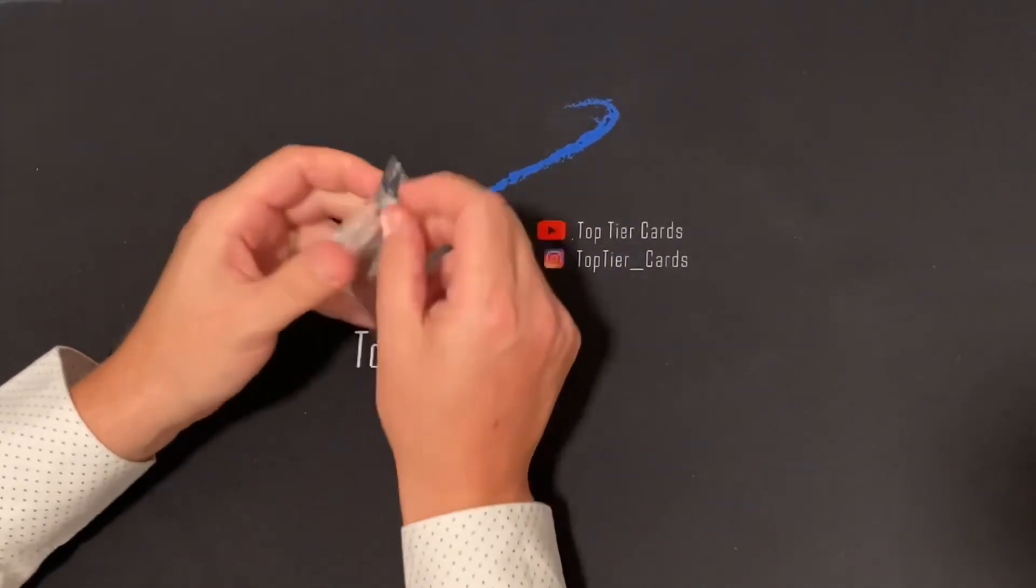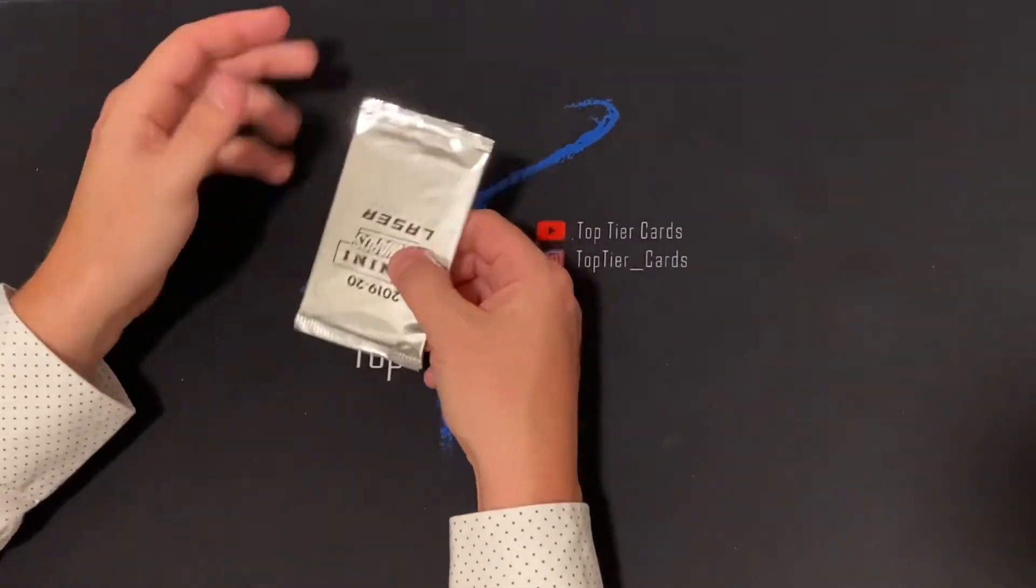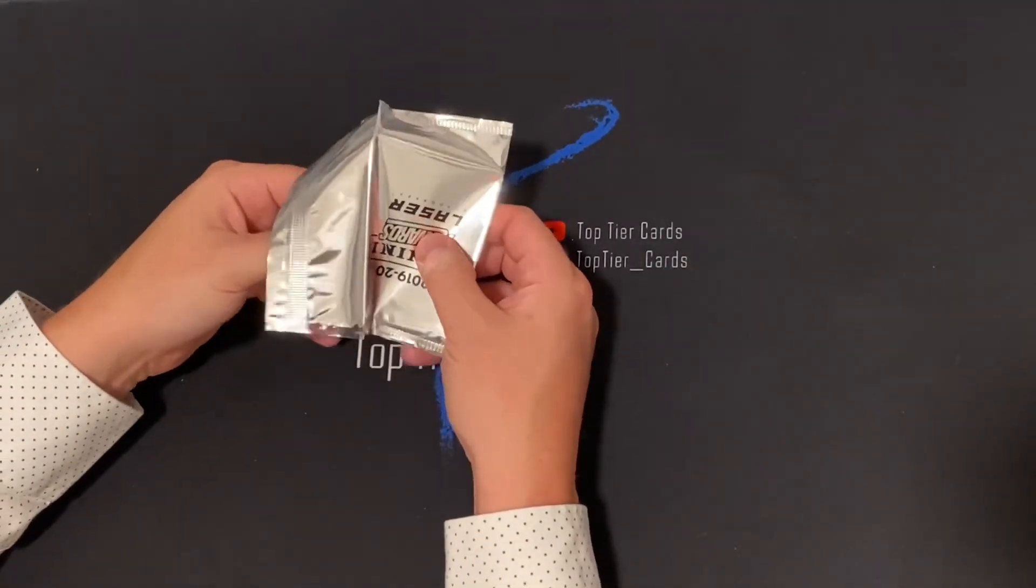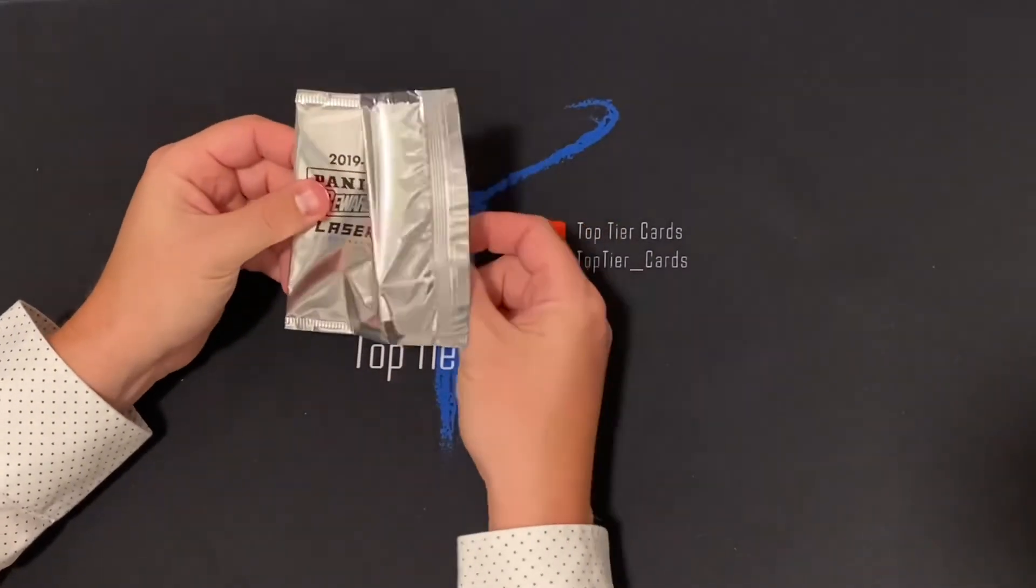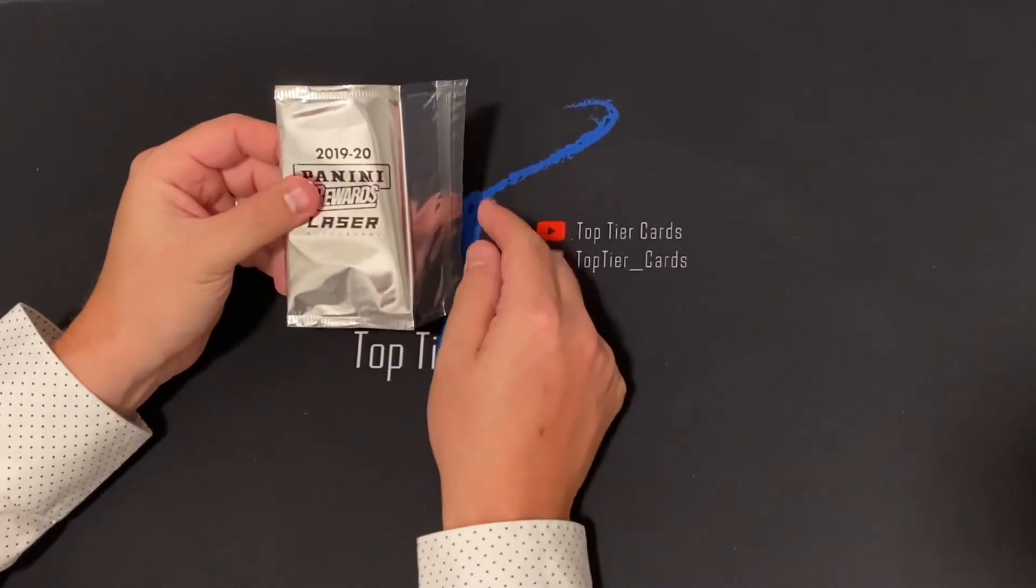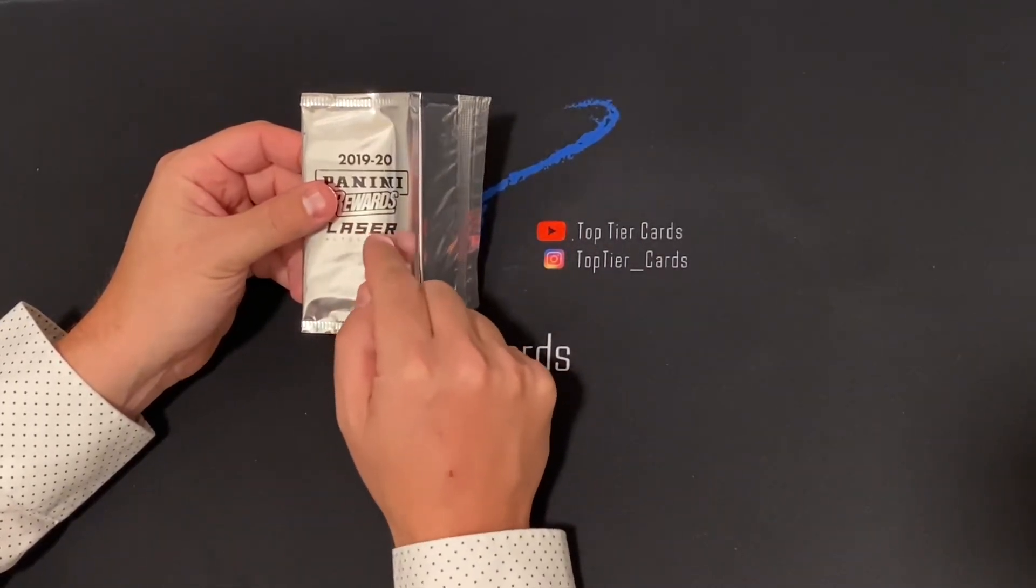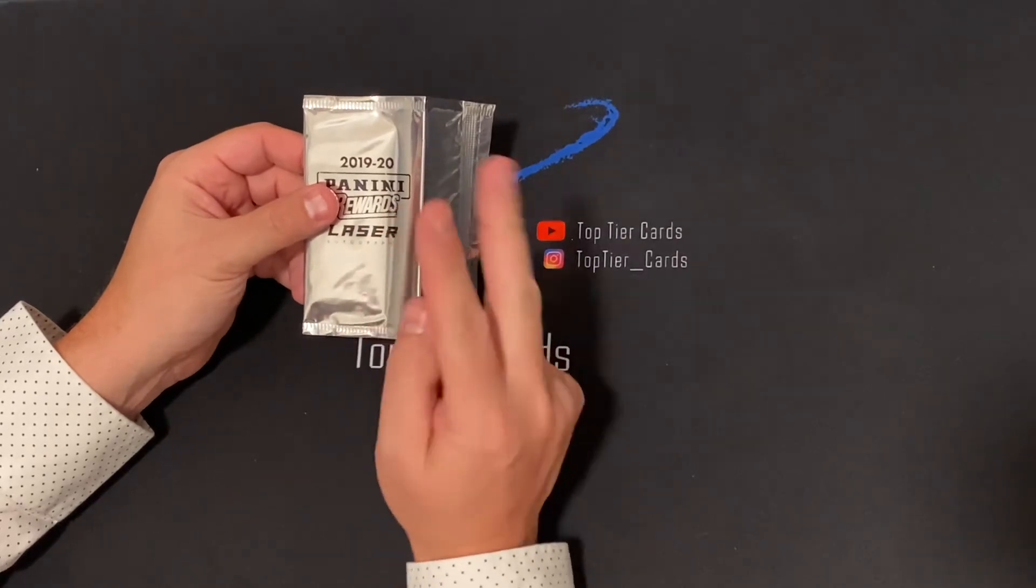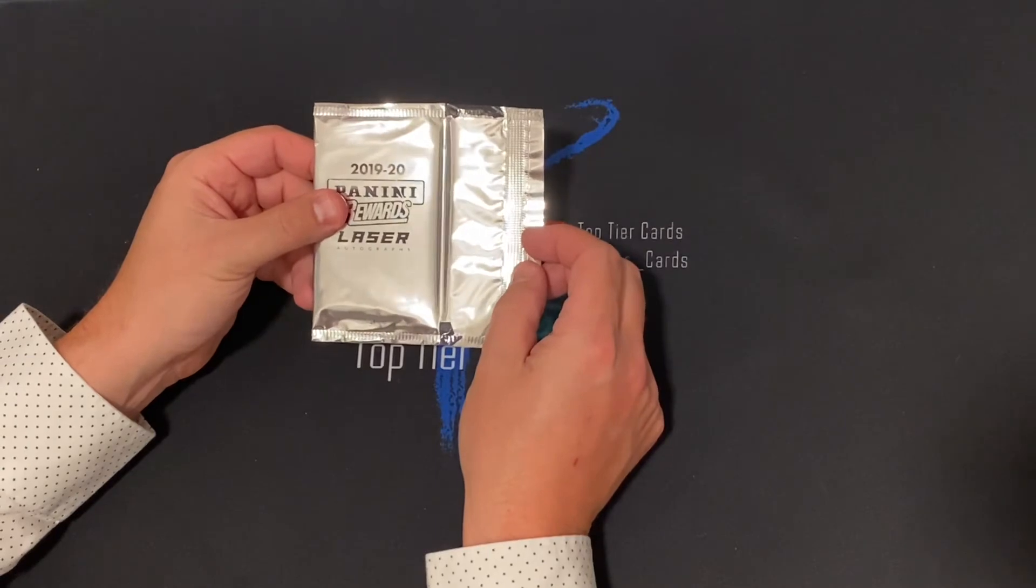All right, it's open, cannot sell it. It's upside down. You're hoping for Zion, Ja. This is 2019-2020, so I think this is going to be the last rewards pack they do that can offer a Zion rookie, a Ja rookie, that type of thing.